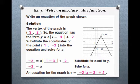So negative 2, that's the Y value, equals A times the absolute value of 1 minus 3, plus 2. When we solve this, we get negative 2 equals A times the absolute value of negative 2 plus 2. We subtract 2 from both sides and get negative 4 equals A times 2. Dividing both sides by 2, we get A equals negative 2. So an equation for the graph is Y equals negative 2 times the absolute value of X minus 3 plus 2.